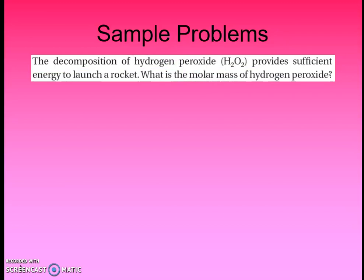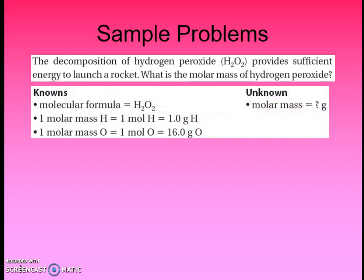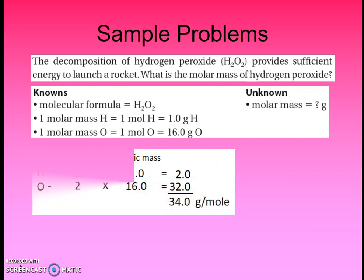Now let's look at the molar mass of hydrogen peroxide, H₂O₂. The 'per' tells us there's an extra oxygen — hydrogen and oxygen normally form water in a 2-to-1 ratio, but here it's two hydrogens to two oxygens. It's a great antiseptic and also very useful for releasing energy to launch rockets. Hydrogen has an atomic mass of 1 and oxygen has an atomic mass of 16. Two atoms of hydrogen times 1, plus two atoms of oxygen times 16, added together gives hydrogen peroxide a molar mass of 34 grams per mole.